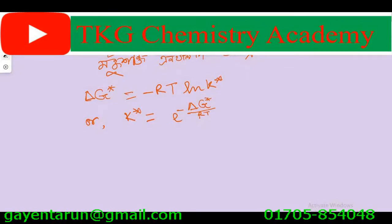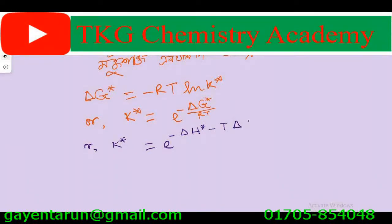Del G star equal del H star minus T del S star. That is, K star equal to e to the power of minus del H star minus T del S star, divided by RT.